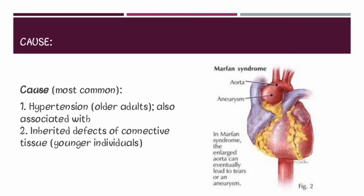Hypertension results in hyaline arteriosclerosis of the vasa vasorum, and this causes decreased flow to the walls of the arteries, which in turn causes atrophy of the media.